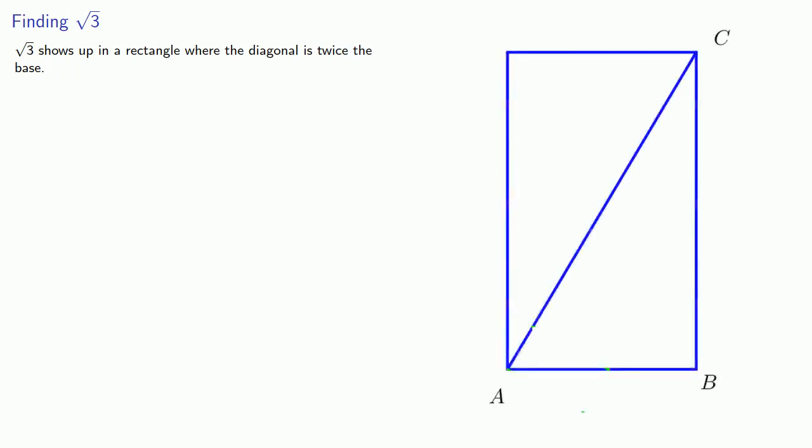We see that √3 shows up in a rectangle where the diagonal is twice the base. If we have a rectangle where our diagonal is twice the base, then √3 will be the relationship between the sides of the rectangle.